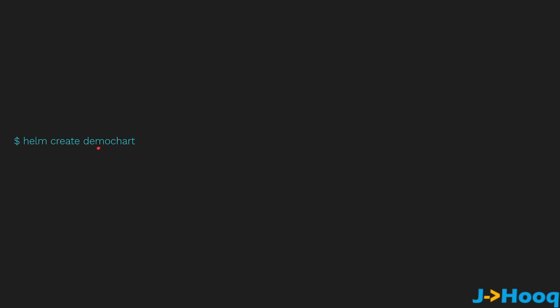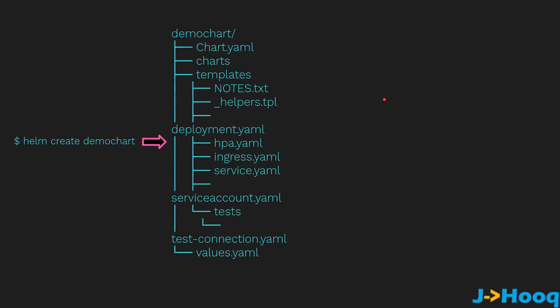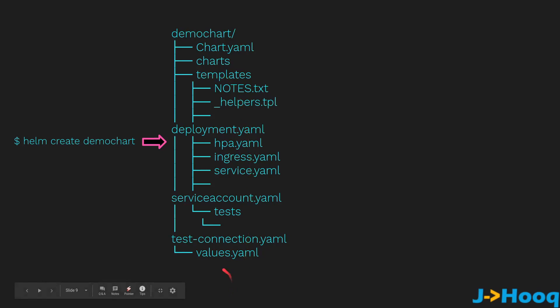When you start working with Helm, the first command you are going to run is 'helm create <chart-name>'. On the screen you can see 'helm create' followed by the chart name — in this case 'demo-chart'. Once you run this command, a directory named 'demo-chart' will be created with a predefined structure. You don't need to create all the YAML configuration files yourself — Helm creates them by default. The main files are chart.yml, the templates directory, and values.yml.